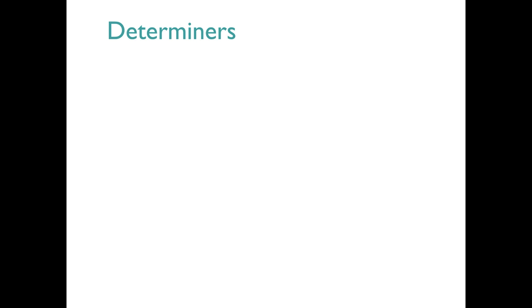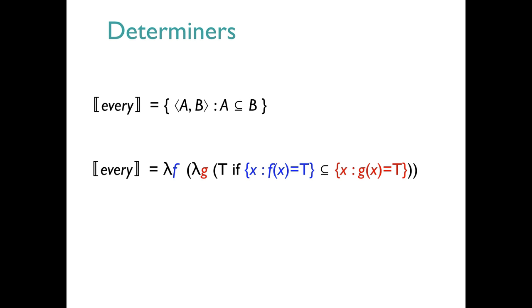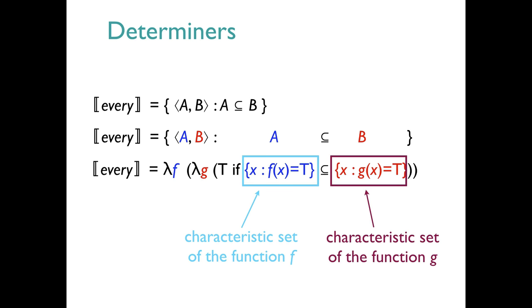Finally, let's look at determiner meanings. These are the most complex meanings in our system. To get warmed up, let's look back at our set-based theory of these meanings. Here's every. It denotes a set of pairs of sets, the set of all such pairs A, B, such that A is a subset of B. It's easy to express this in our function-based grammar. And here I've stretched out the set-theoretic one to show the correspondences more clearly. Whereas before we could talk about sets directly, now we talk about the characteristic set of the incoming functions.